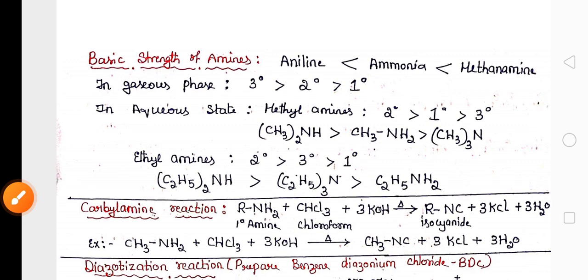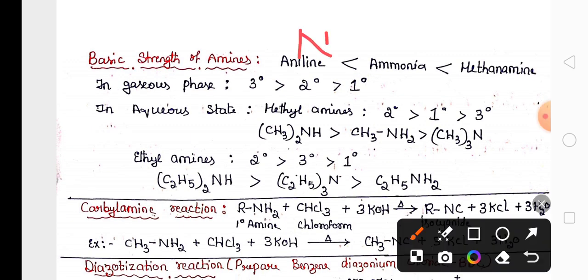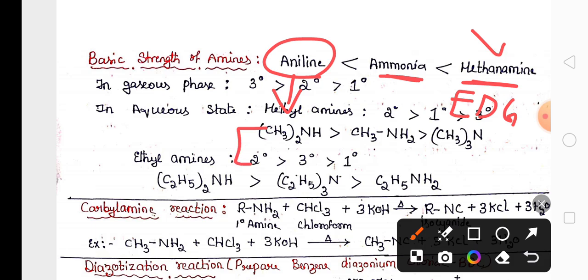In the basic strength of amines, you know the basic strength of amine is because of the presence of lone pair of electrons on nitrogen. Compared to ammonia, aliphatic primary amines are more basic because they have electron donating groups. Aromatic primary amines are least basic because aromatic amines have electron withdrawing groups.